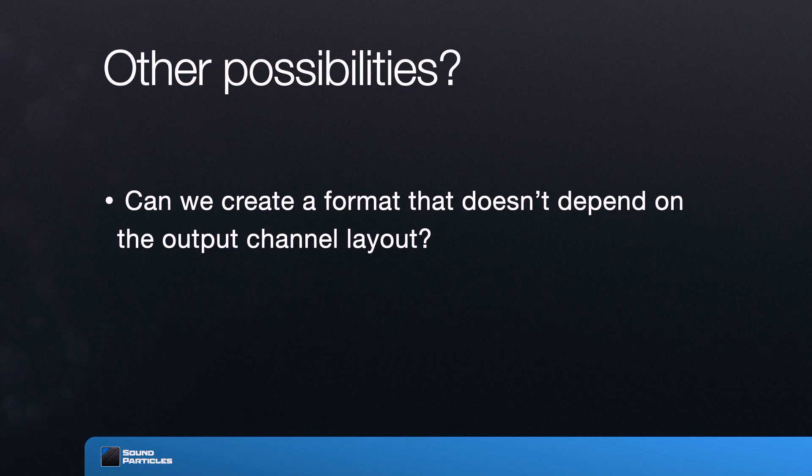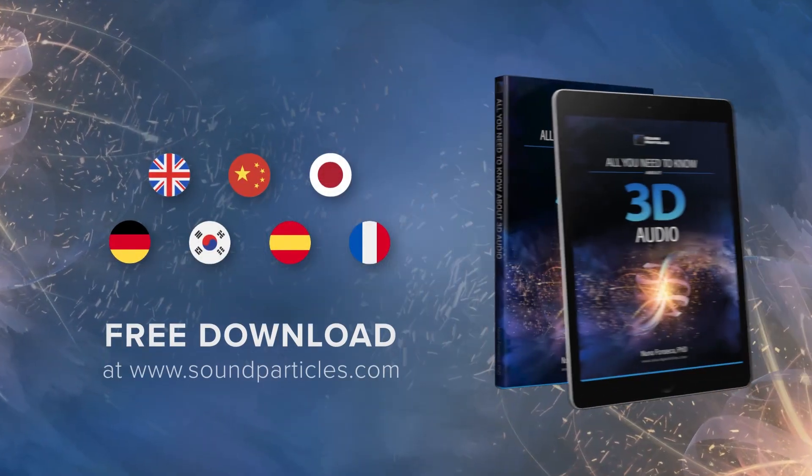The problem with channel-based audio is that if you want to change the layout, you will have difficulties — it does not adapt to different layouts. This raises the question: could we create a format that allows mixing once but reproduces correctly across different layouts without requiring a new mix each time? That is essentially the goal of object-based audio and also of Ambisonics, which will be covered in the next two videos. Stay tuned, and don't forget our free ebook: 'All You Need to Know About 3D Audio.'